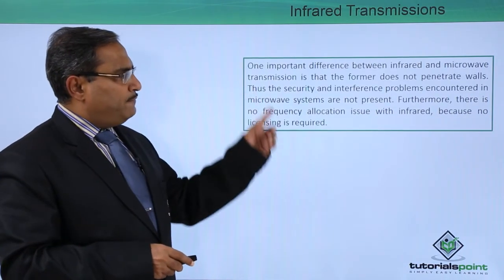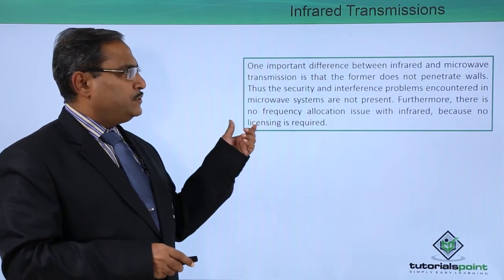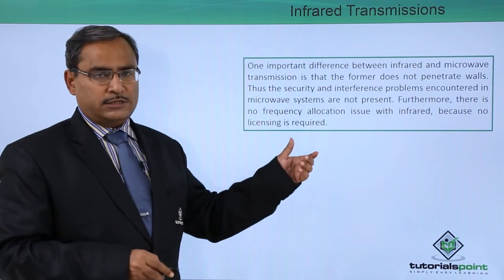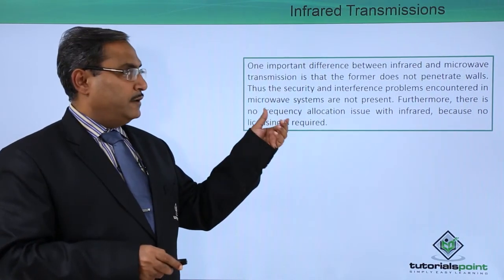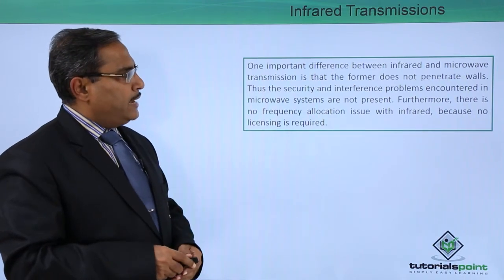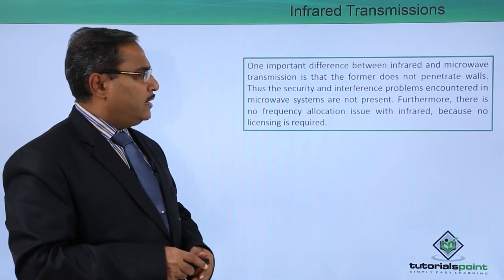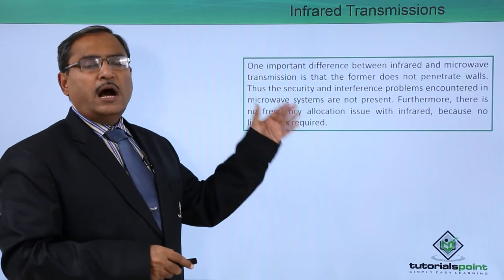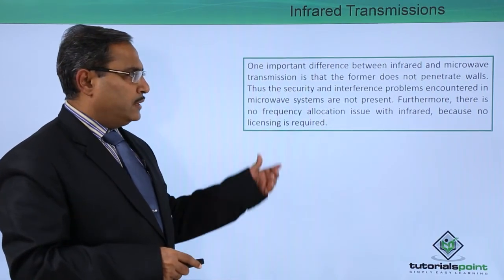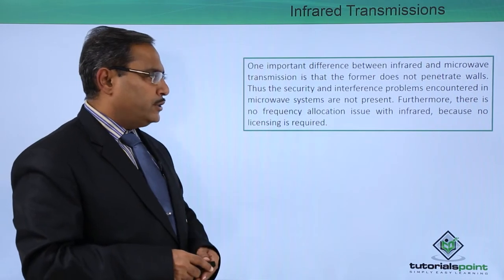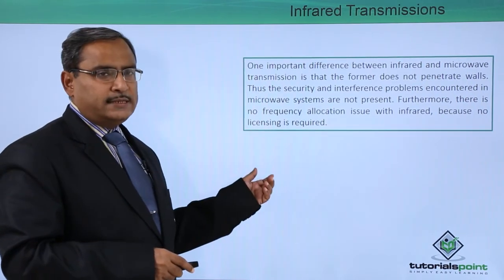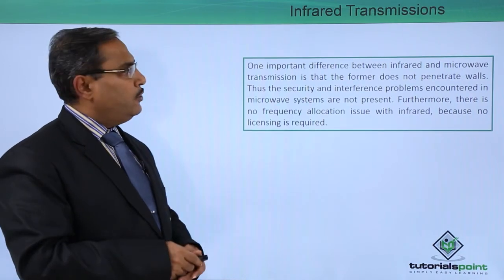One important difference between infrared and microwave transmission is that infrared does not penetrate walls. Thus, the security and interference problems encountered in microwave systems are not present in infrared systems. Further, there is no frequency allocation issue with infrared because no licensing is required.